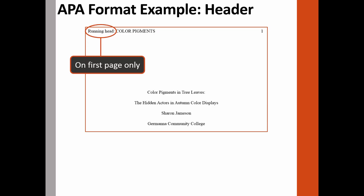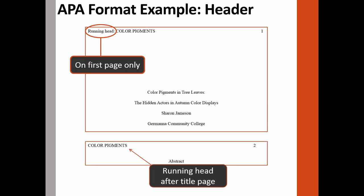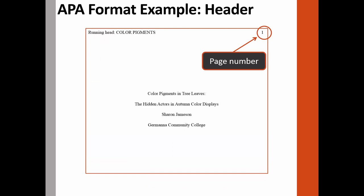Notice the words 'running head' in the header. The words 'running head' only appear on the title page to introduce the paper's shortened title. All subsequent pages will only display the shortened title without the introductory phrase. The title page, as well as each successive page, will also have a page number inside the header in the upper right-hand corner of the page.